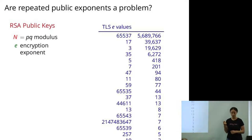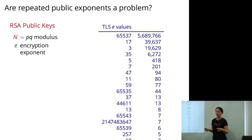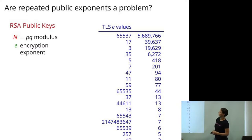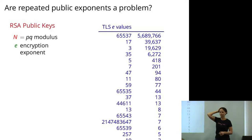If we're starting to look for problems, question number one: the textbook says choose a random P, Q, and E. That's not what people do in practice. In practice, people use small E — in fact, everybody uses basically the same E. Here's a list of E values from public keys in TLS certificates from the 2011 dataset. You can see that basically everyone uses E equals 65537.